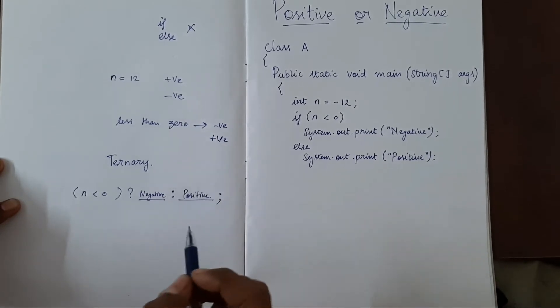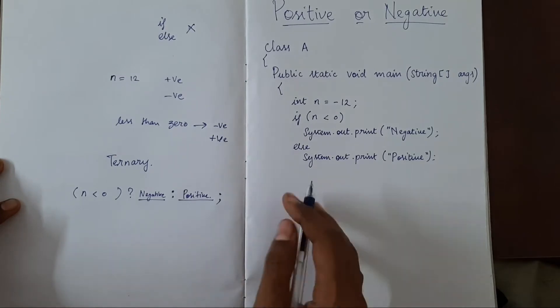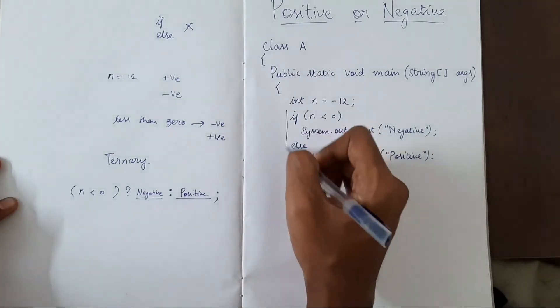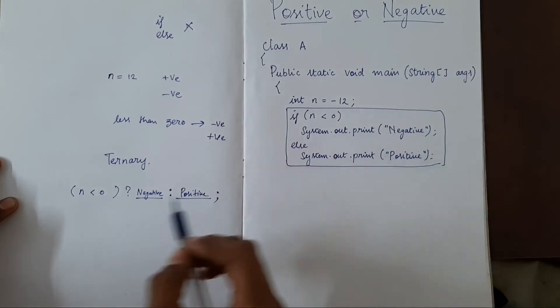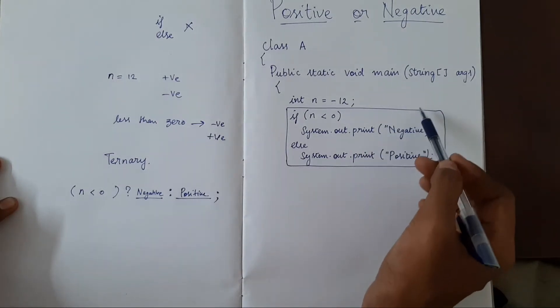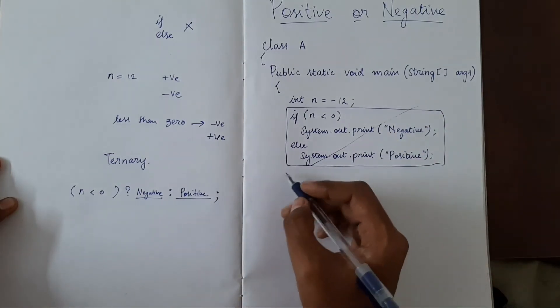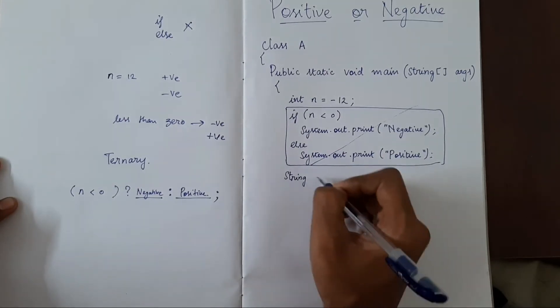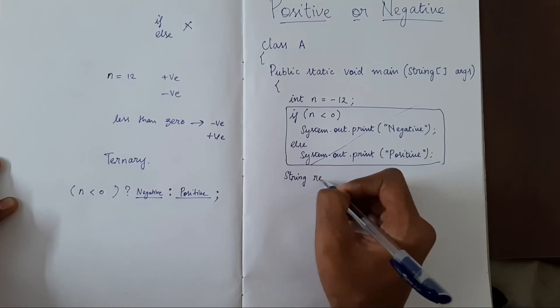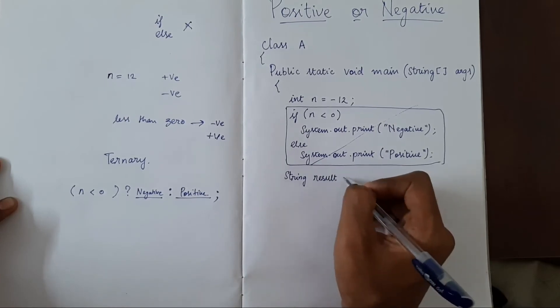So this is the ternary operator. Instead of the if-else, we can replace this with just two lines. We will put a string result equal to